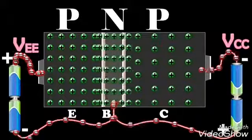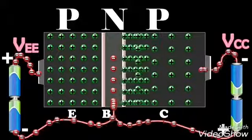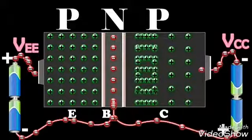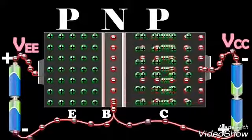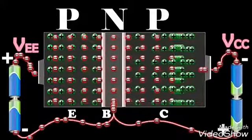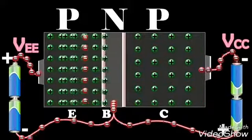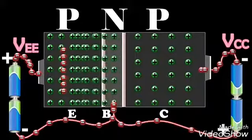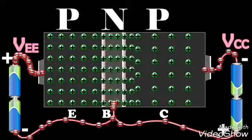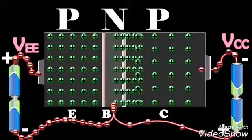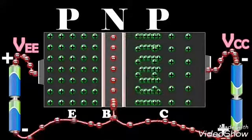The remaining number of holes, which do not undergo recombination in the base, reach the collector. These are neutralized by an equal number of electrons flowing from the negative terminal of the battery VCC into the collector.